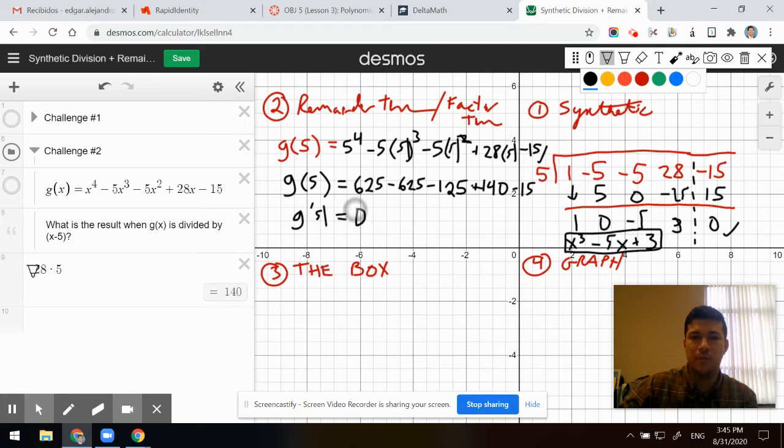By the remainder theorem, our remainders match up. The factor theorem says that if g of 5 is 0, then x equals 5 is a zero.